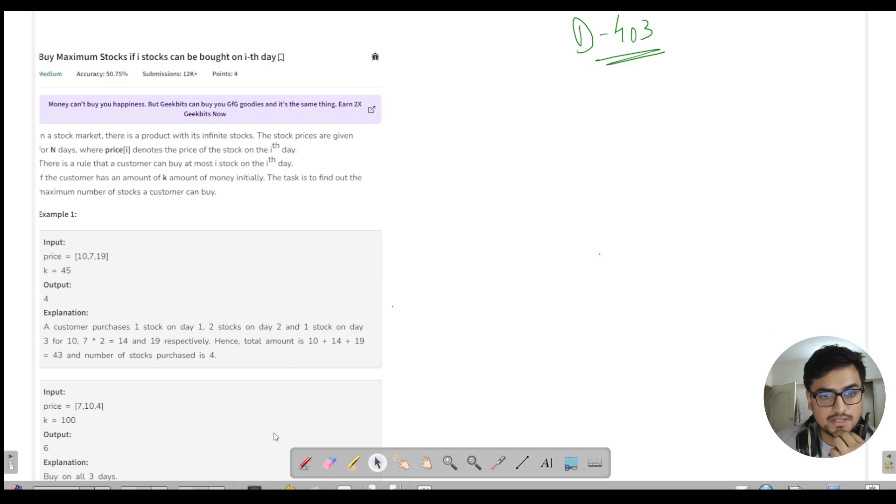For these stock prices, 10, 7, and 19, we need 1-based indexing. So this is 1, this is 2, and this is 3. The indexing says that at most you can buy stock of price 19, maximum quantity is 3, and similarly for the rest. The task is to buy maximum stocks using this given money.